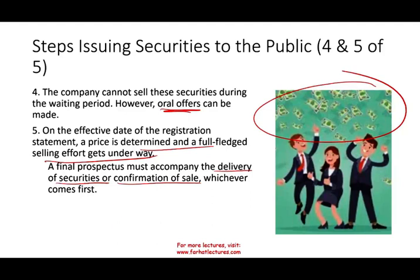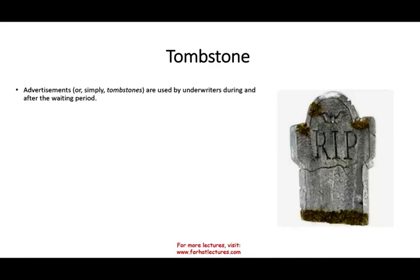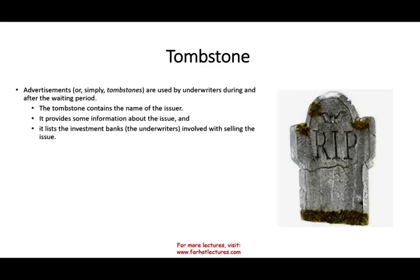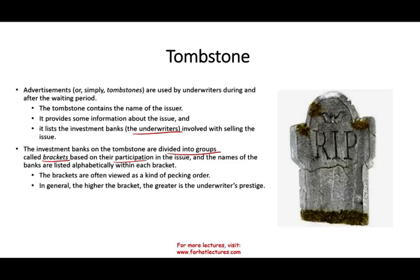What we went through is the initial public offering, or IPO — whether it's a new company or an existing company selling securities to the public. One term to be familiar with is the Tombstone, which is basically an advertisement used by underwriters during and after the waiting period. It contains the name of the issuer, provides information about the issue, and lists the investment bankers or underwriters involved. The underwriters on the tombstone are divided into groups called brackets based on their participation, and names are listed alphabetically within each bracket. In general, the higher the bracket, the greater the underwriter's prestige.